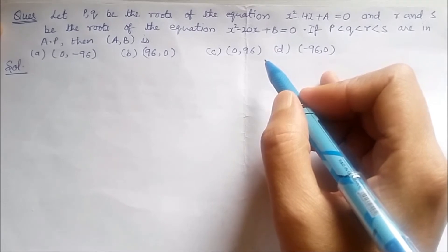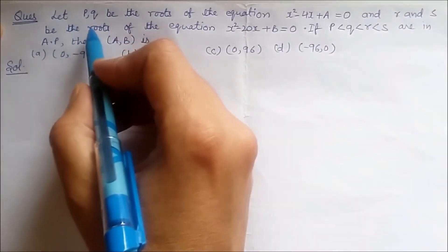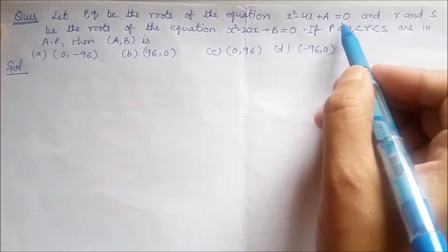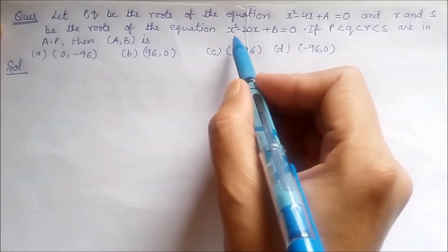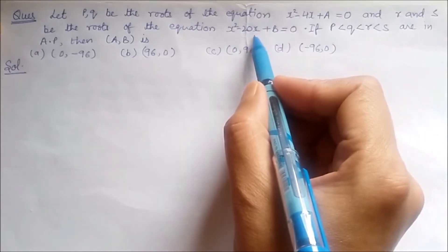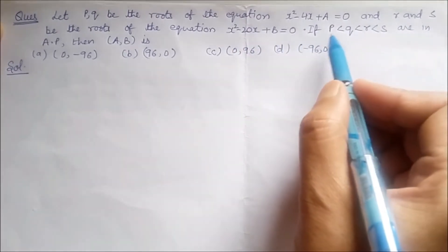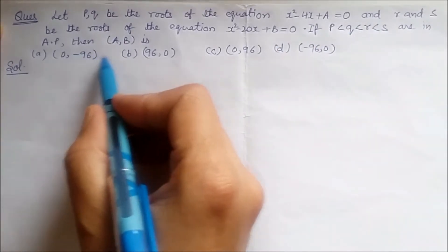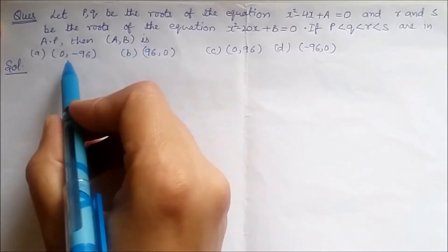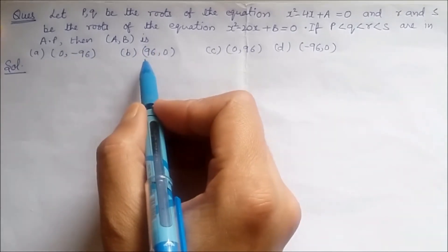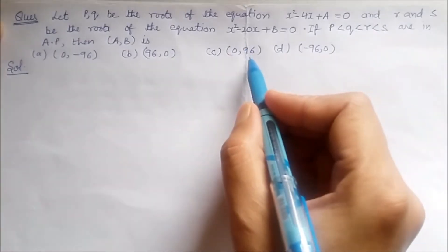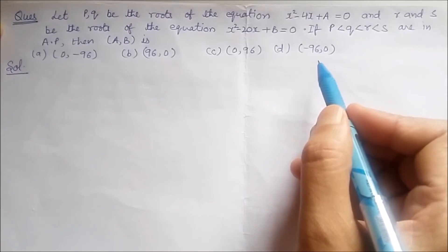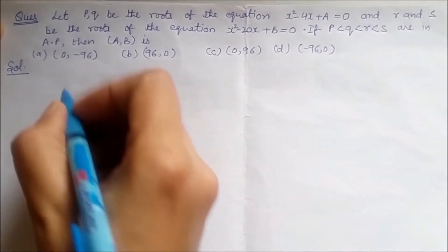The question is: let p and q be the roots of the equation x² - 4x + a = 0, and r and s be the roots of the equation x² - 20x + b = 0. If p < q < r < s are in AP, then find (a, b). The options are: (0, -96), (96, 0), (0, 96), and (-96, 0).